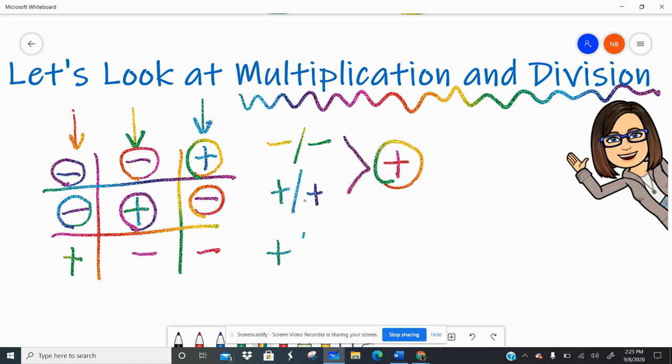If at all they are mixed, then your answer is going to be negative. So let's see what that actually looks like when we start using real numbers. So let's start with multiplication.